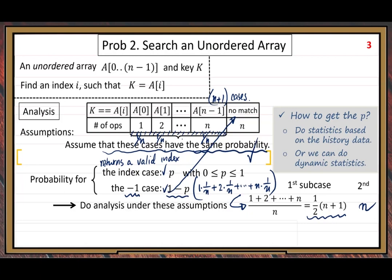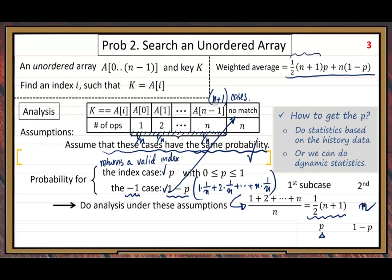Now we find the corresponding weights. The weight for the first sub-case is p — its probability — and the weight for the second sub-case is 1 minus p. We combine them using the weighted average formula: the average for the first sub-case multiplied by p, plus the average for the second sub-case multiplied by 1 minus p. That gives us our formula.